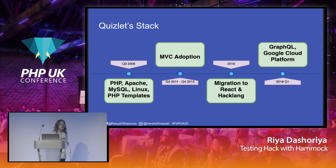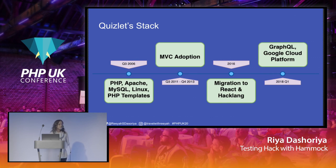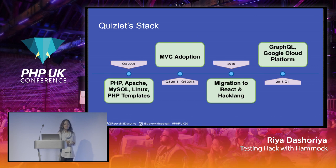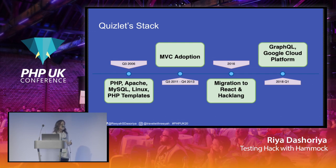Initially, when Quizlet was started back in 2006, it was based on the LAMP stack — PHP, Apache, MySQL, Linux — and PHP templates were used for the frontend. Moving forward, as things were changing in technology, in 2011 we started the adoption of an MVC framework. As more and more students started using Quizlet, we realized we needed to make the site faster. Back in 2016, we started migrating the PHP code and everything in the frontend to React and Hacklang, which made our backend performance super great.